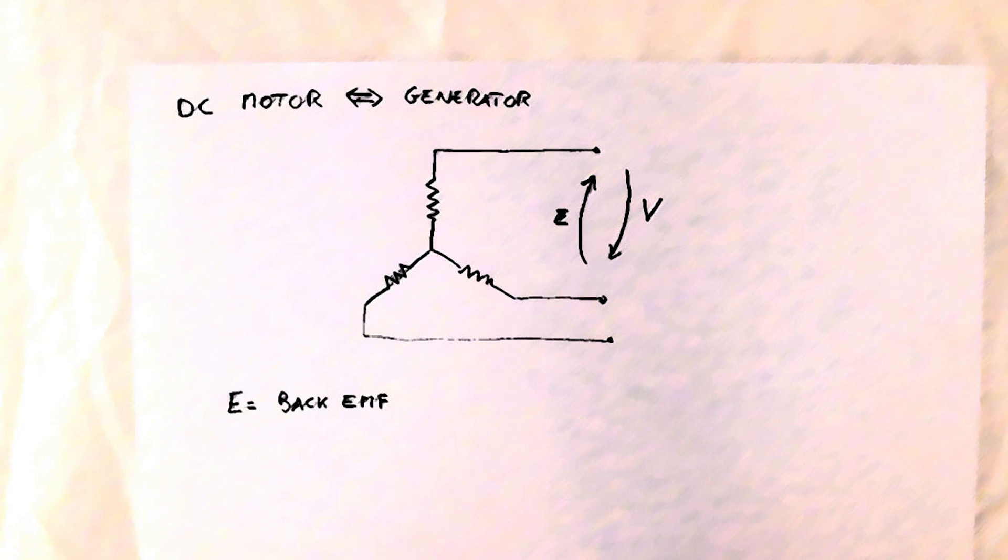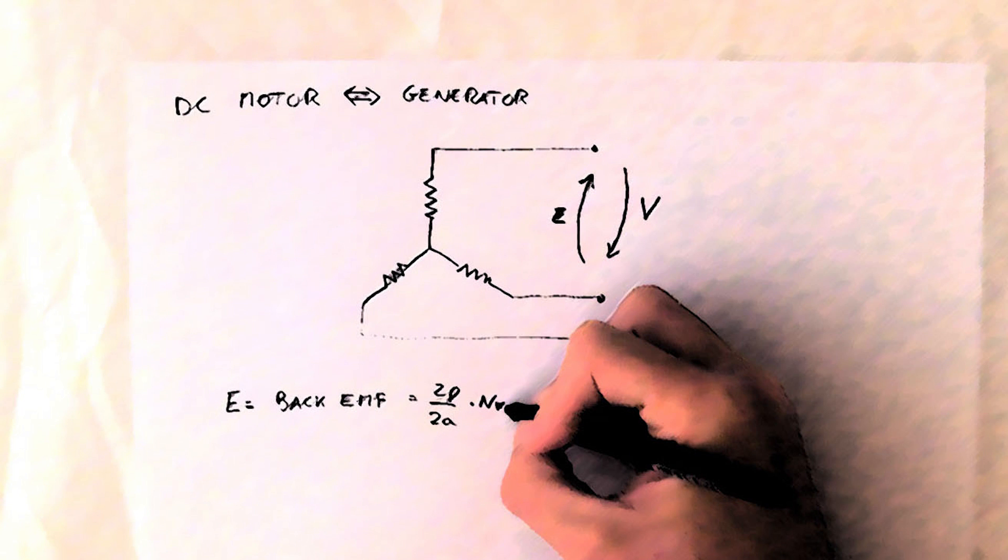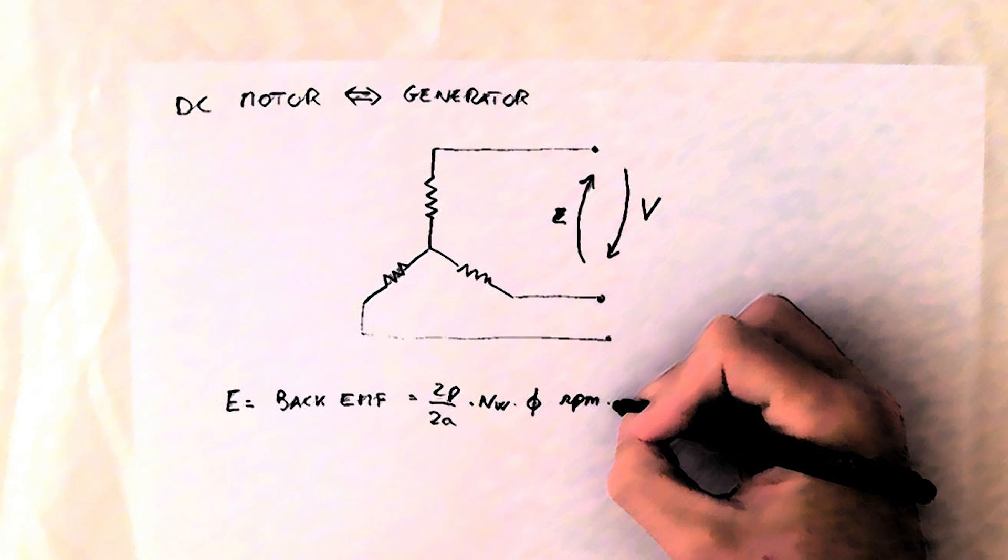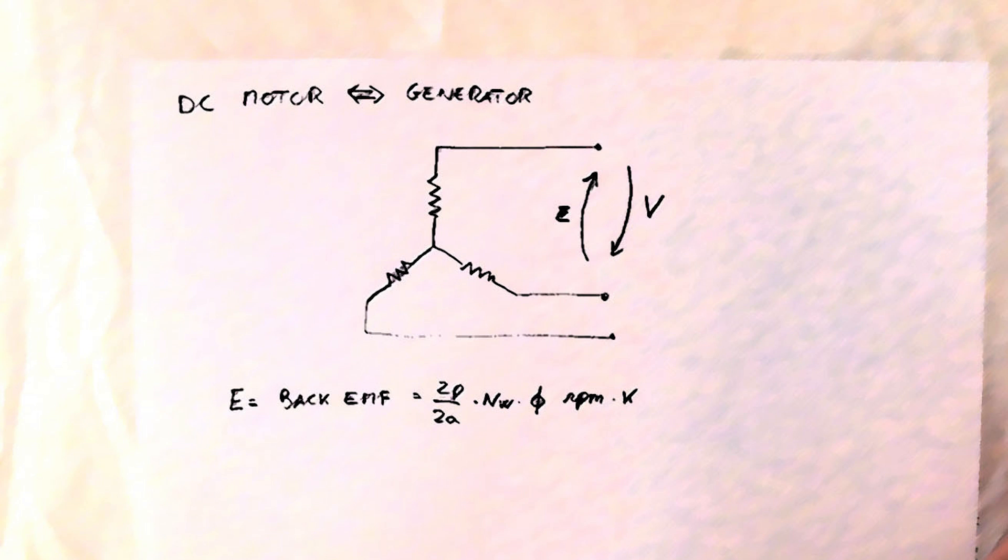E depends on the number of poles, the number of coils for each pole, the magnetic flux, the engine speed, and a constant, because engineers love constants.